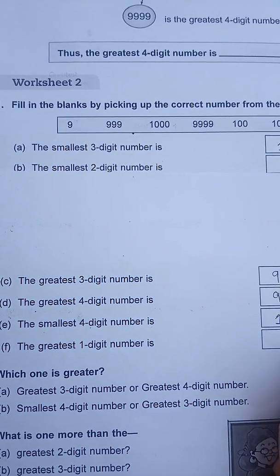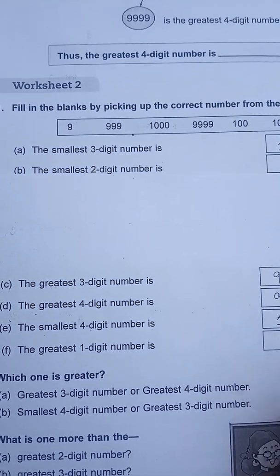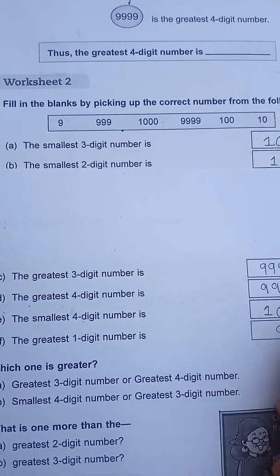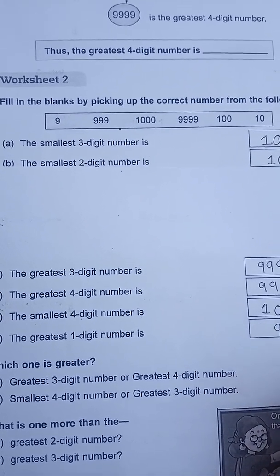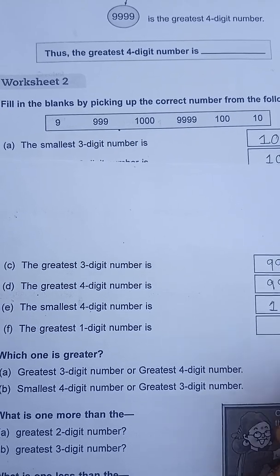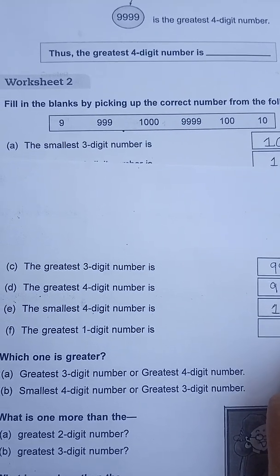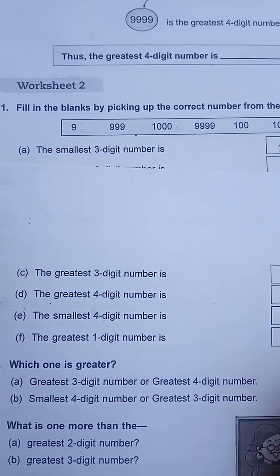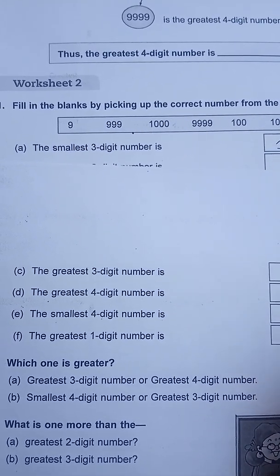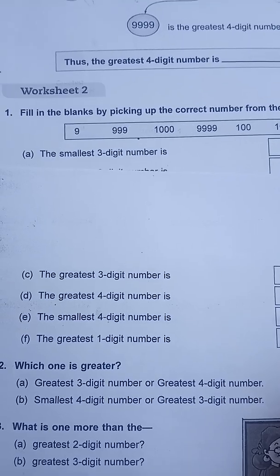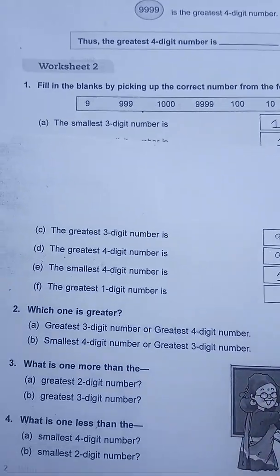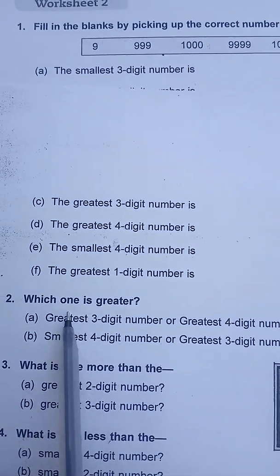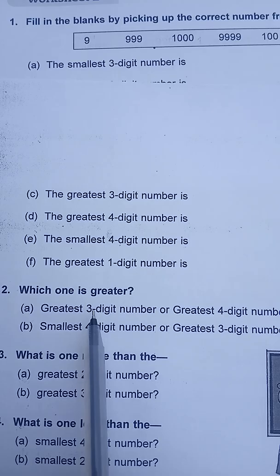The greatest one-digit number: 1, 2, 3, 4, 5, 6, 7, 8, 9 — nine is the greatest one-digit number. Greatest three-digit, greatest four-digit — okay, let's come to question number two.